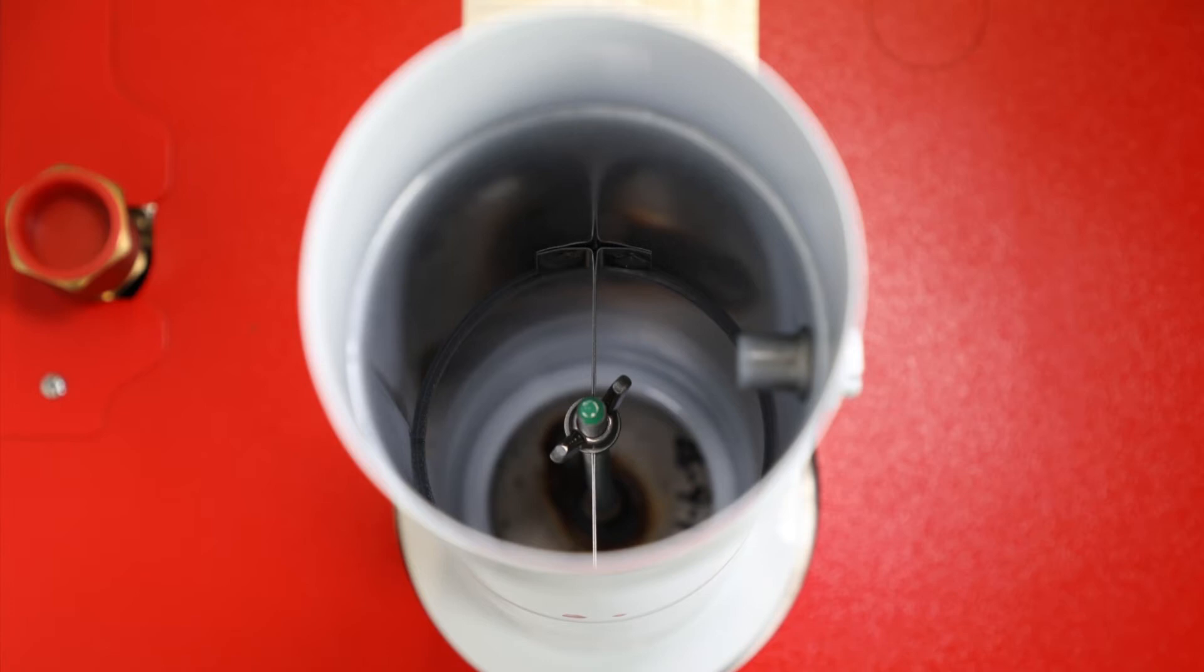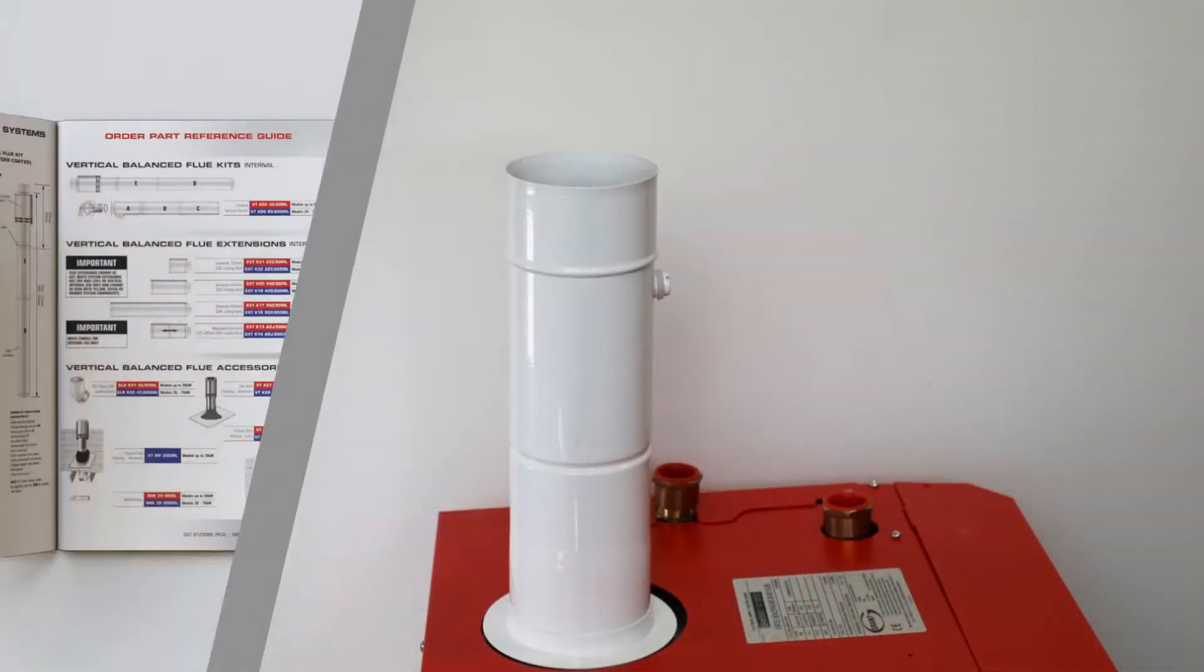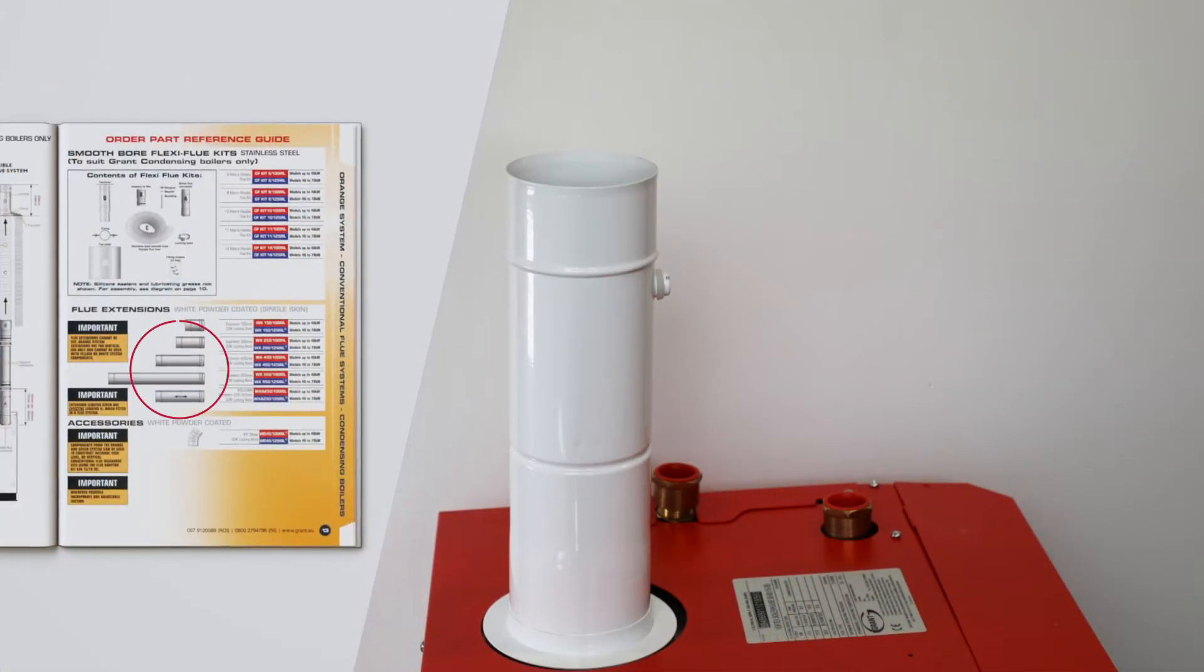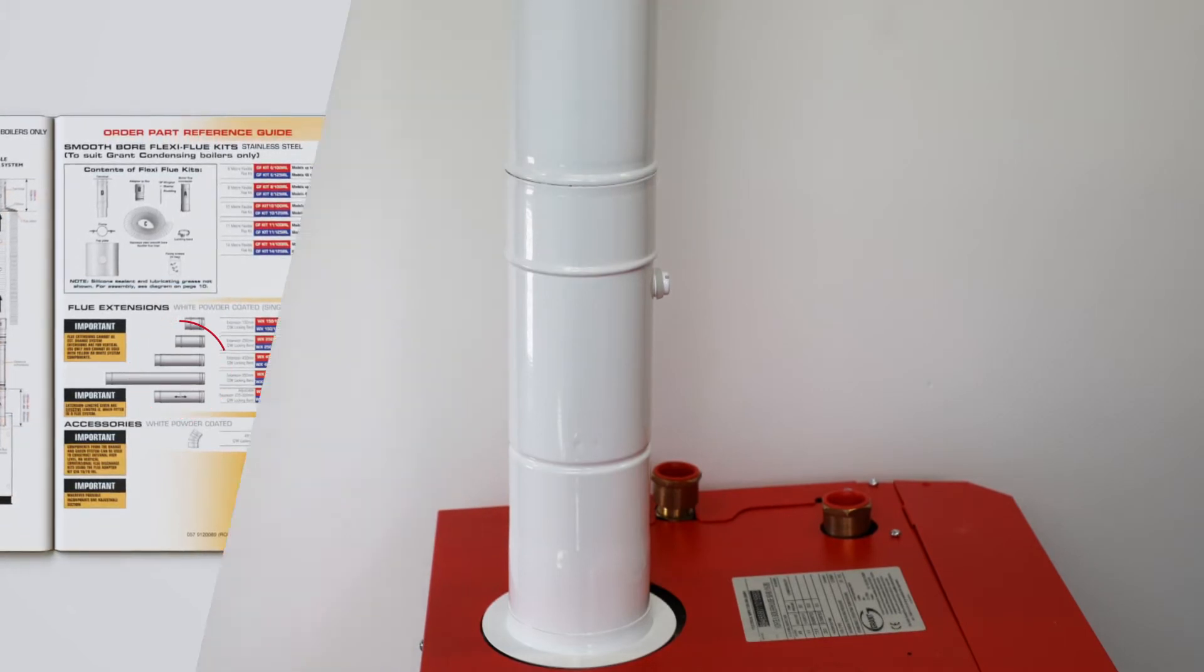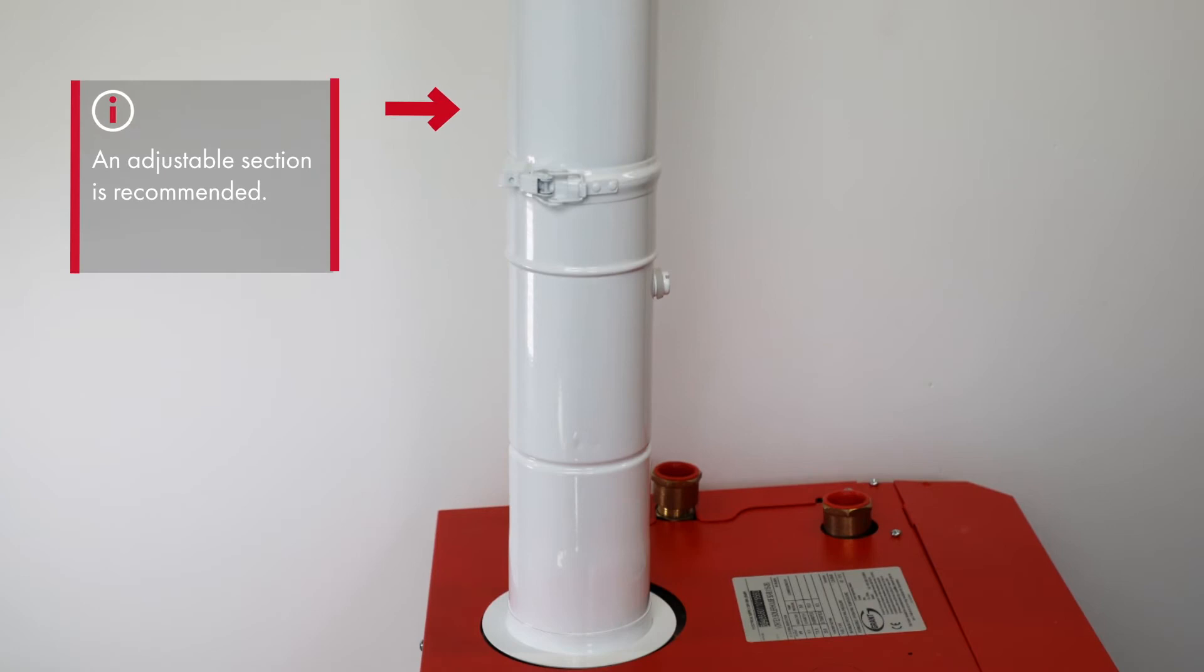If the flue must be extended, the white powder coated flue from page 13 can be used if needed. An adjustable section, as on all flues, is recommended onto the boiler connector.